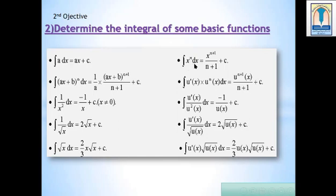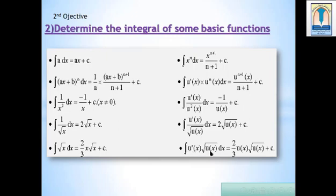Important rule: Integral of x^n dx equals x^(n+1) over (n+1) plus c. Integral of u prime(x) times u^n(x) dx equals u^(n+1)(x) over (n+1) plus c, where u prime is the derivative of u. Integral of u prime(x) over u squared(x) dx equals minus 1 over u(x) plus c. Integral of u prime(x) over radical u(x) dx equals 2 radical u(x) plus c. Integral of u prime(x) times radical u(x) dx equals 2 over 3 times u(x) radical u(x) plus c.